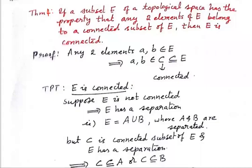Hello dear students, today let us learn Theorem 4 on connected spaces. If a subset E of a topological space has the property that any two elements of E belong to a connected subset of E, then we have to prove E is connected.